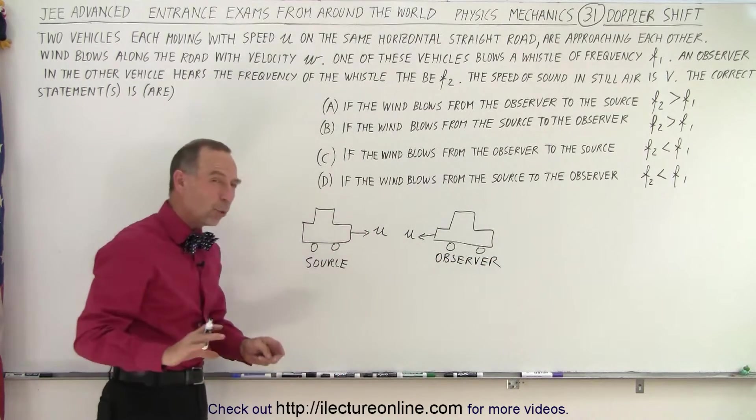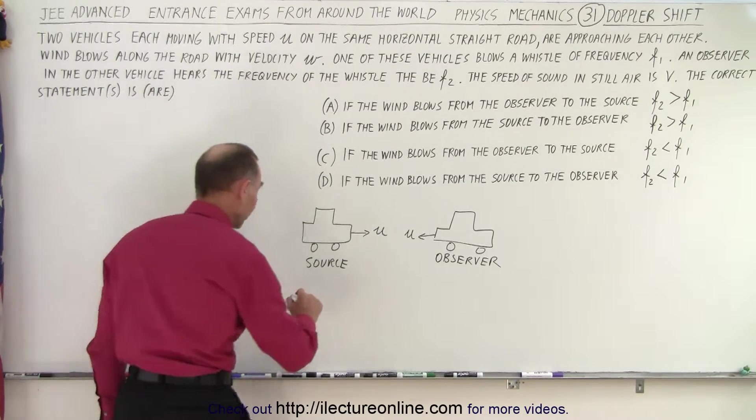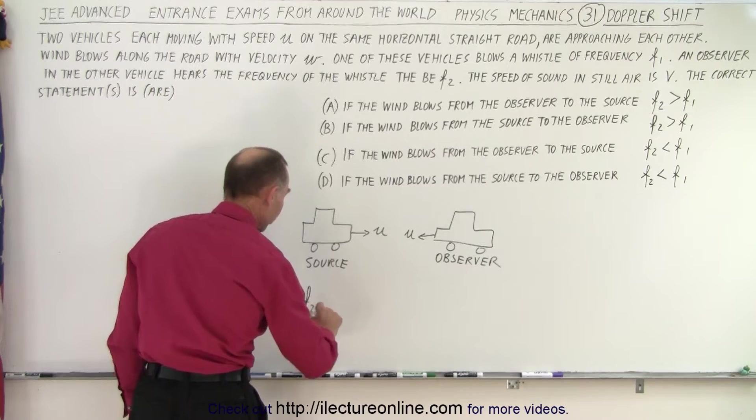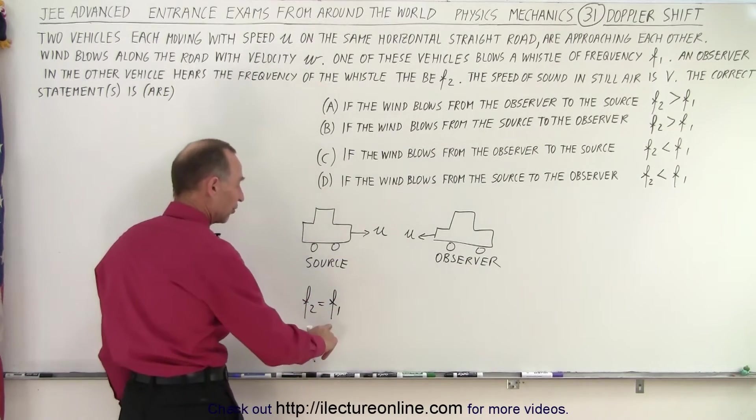Now let's leave the wind out of it for a moment. Let's write down the equation that we used to solve this problem. So the frequency observed, which is F2, is equal to the frequency of the source, which is F1,